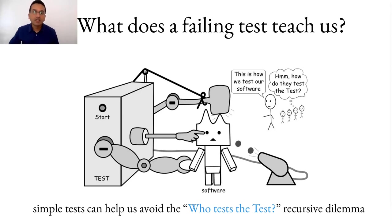From this failing test we learn that if a test suite is relatively complex then it will demand a test suite for itself leading to a recursive dilemma. Therefore we should prefer a simpler test suite.